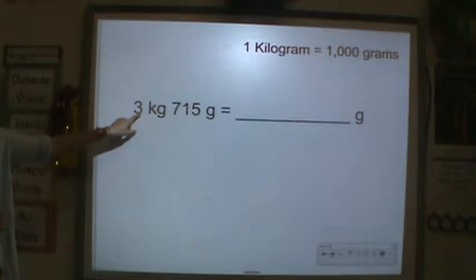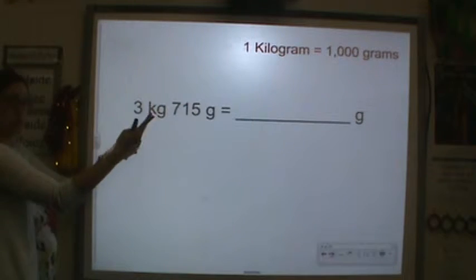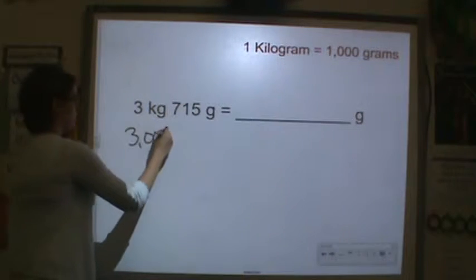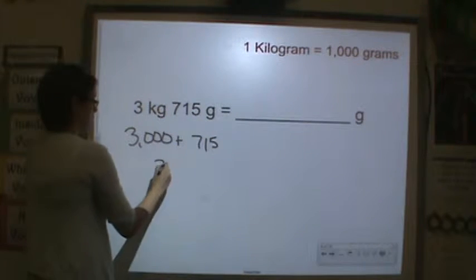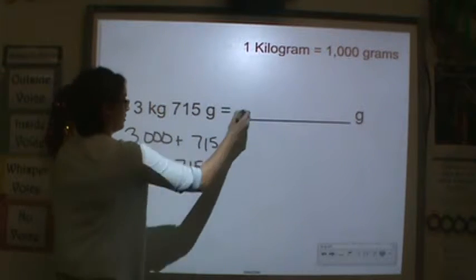3 kilograms. Well, I would just count three groups of 1,000: 1,000, 2,000, 3,000. So 3,000 plus 715 grams, you get 3,715.